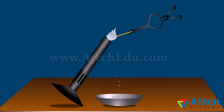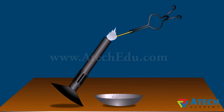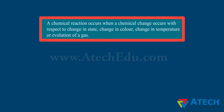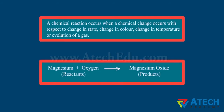Magnesium ribbon burns with a white flame and changes into a white powder — this is magnesium oxide. It is formed due to the reaction between magnesium and oxygen present in the air. A chemical reaction occurs when a chemical change occurs with respect to change in state, change in color, change in temperature, or evolution of a gas.